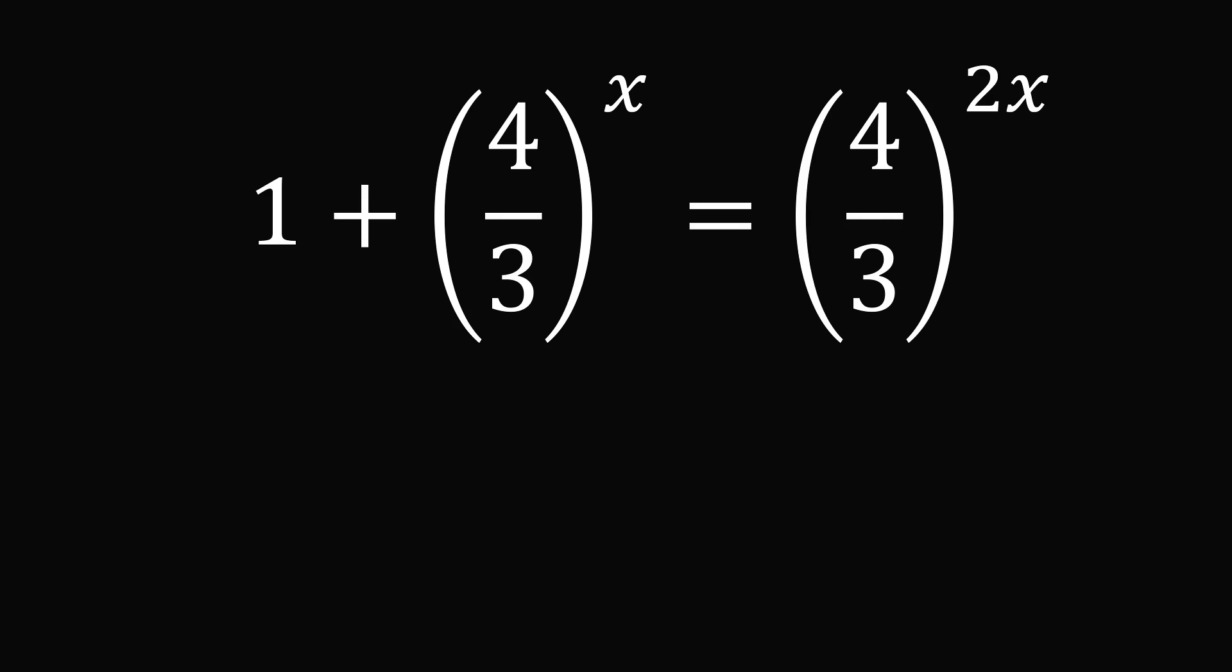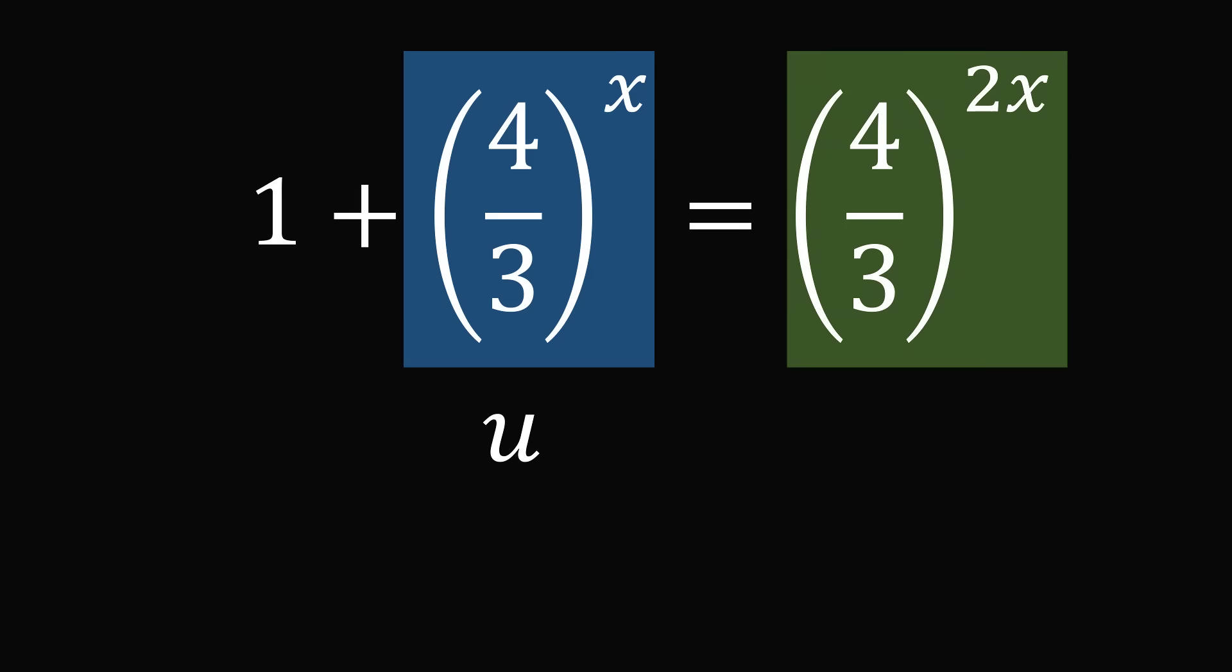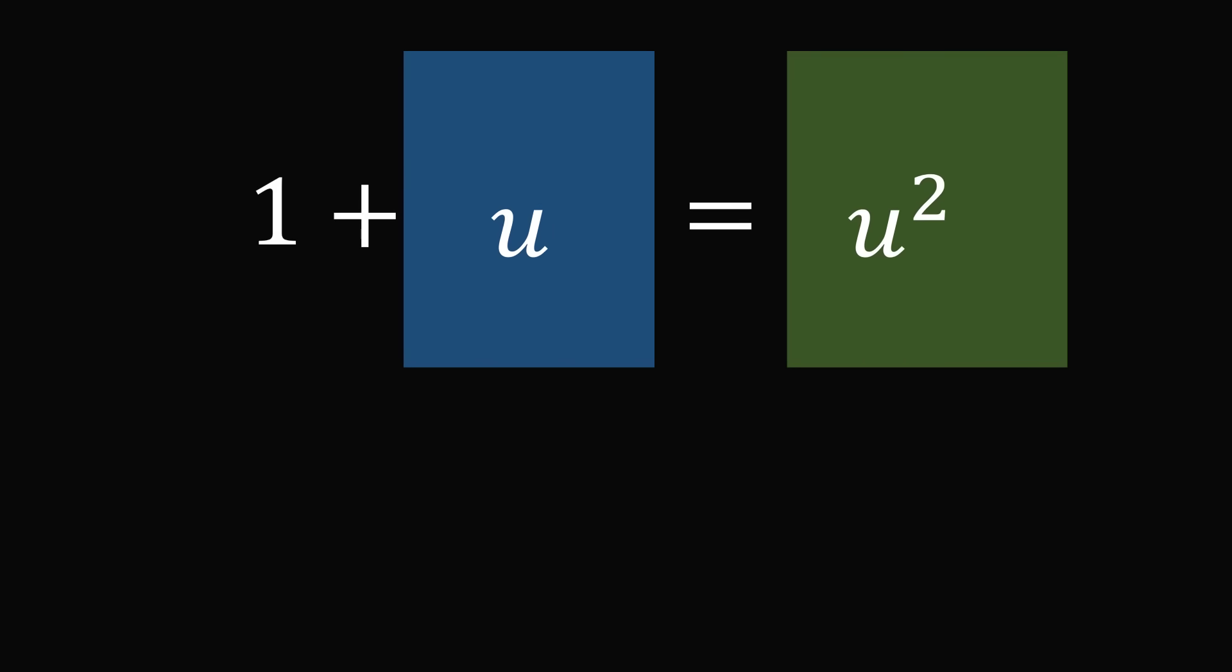Let's now do a substitution. Suppose that (4/3)^x equals a variable u. If we square u, we end up with exactly the term on the right side. The term on the right side equals u^2. So we can transform this complicated equation into a simple equation: 1 + u = u^2.